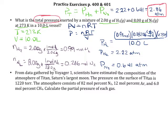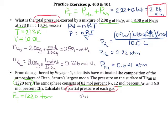For the next question, they are giving us a total pressure and a bunch of mole percents, and they're asking us to calculate the partial pressure of each gas. Mole percents are related to mole fractions: if you take a mole fraction and multiply by 100, you get a mole percent. So if you have 82 mole percent nitrogen, that means a mole fraction of 0.82, and that mole fraction multiplied by the total pressure gives the partial pressure.